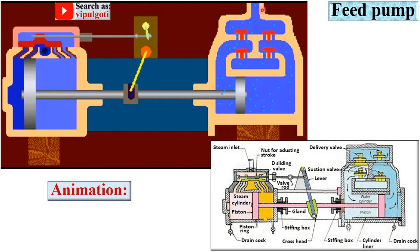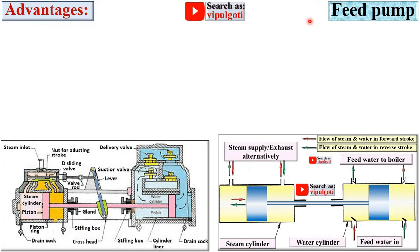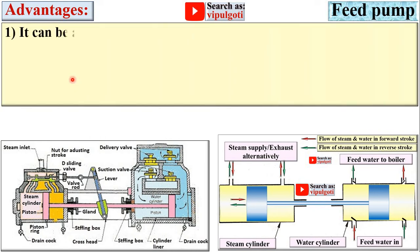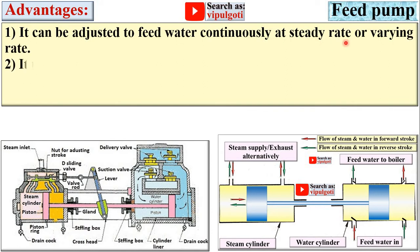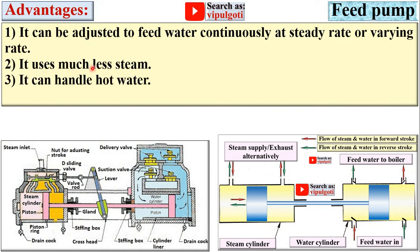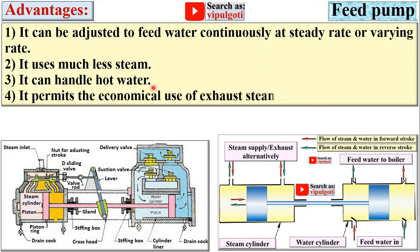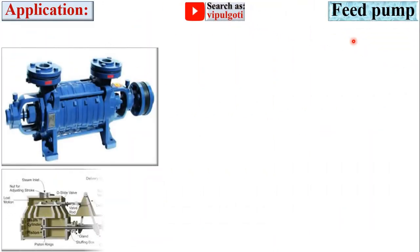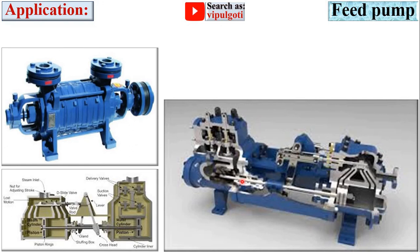Advantages of the feed pump: it can be adjusted to feed water continuously at a steady rate or varying rate; it uses much less steam; it can handle hot water; and it permits the economical use of exhaust steam for feed water heating.